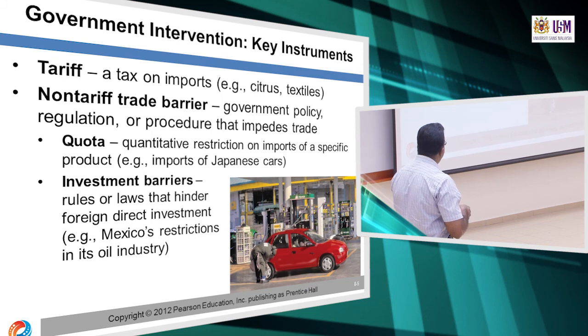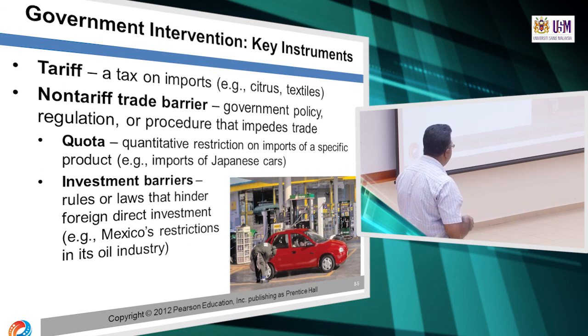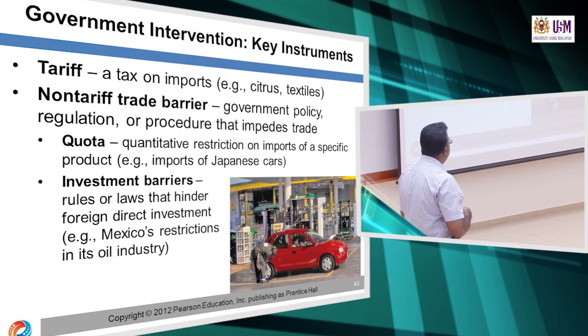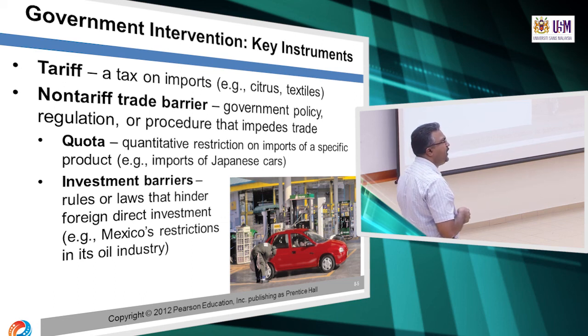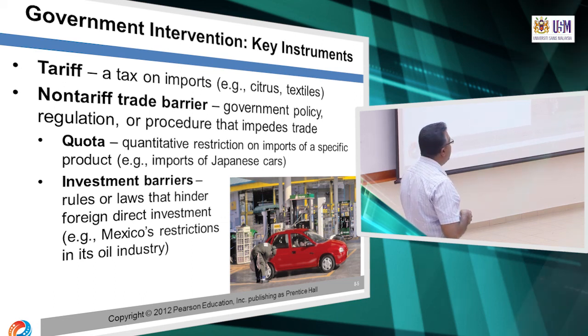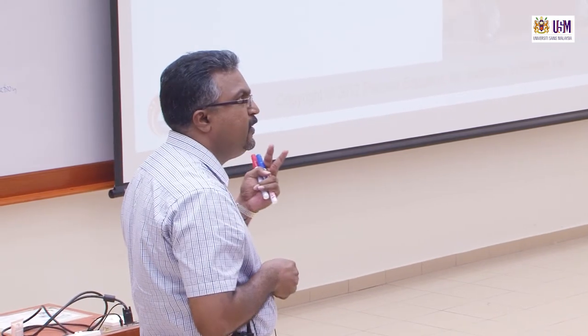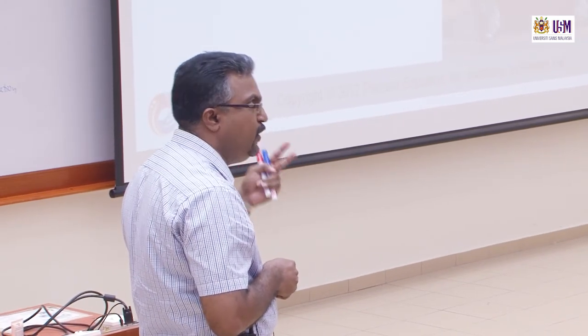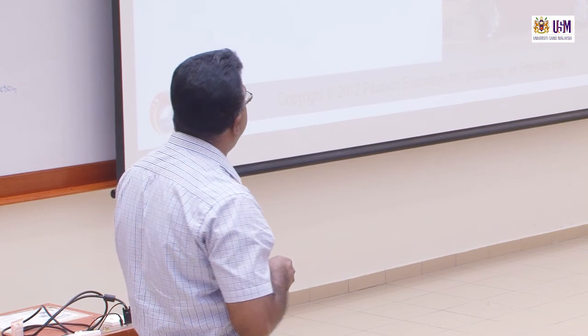Investment barriers are rules and laws that hinder foreign direct investment — for example, Mexico's restrictions in its oil industry. The barriers in terms of rules and red tape all hinder free trade. There are two types: tariff and non-tariff, which we will look at in more examples.